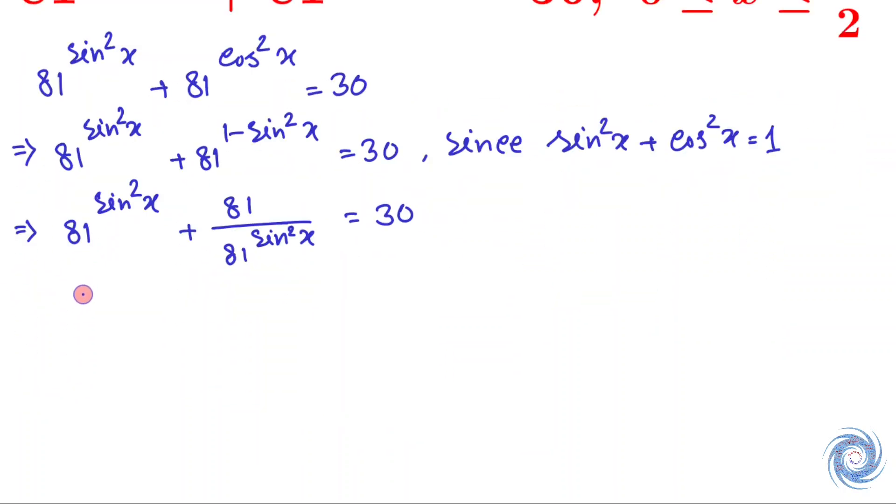Now let us assume that y = 81^(sin²x). From the above relation we have 81^(cos²x) = 81^(1-sin²x) = 81/y.